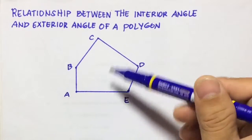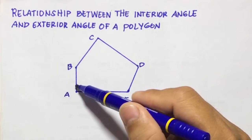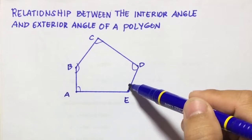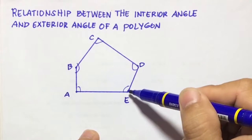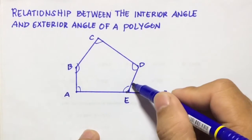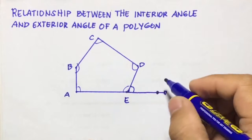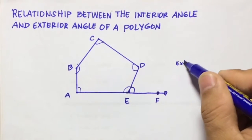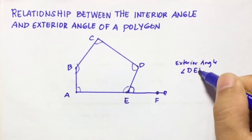If we have this pentagon here, pentagon A, B, C, D, E, we have the interior angles: angle A, angle B, angle C, angle D, and angle E. Now if we extend line segment AE, we can form an exterior angle. So if we let this point here be point F, we can have exterior angle DEF.